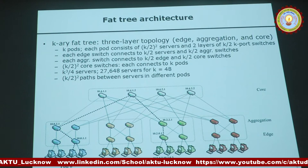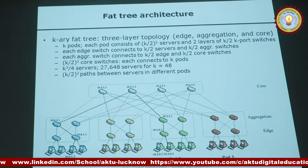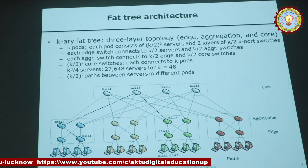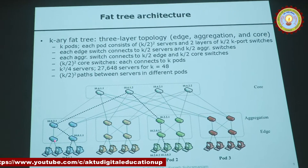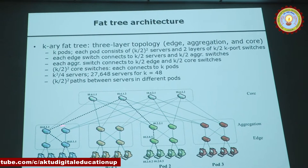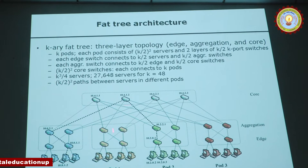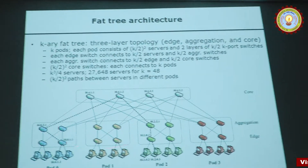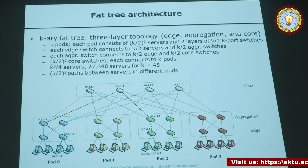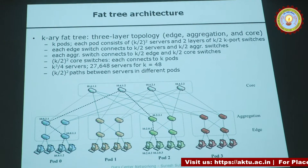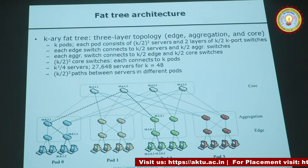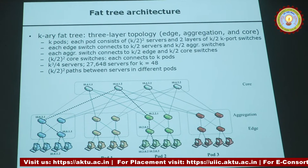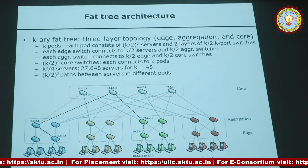There are also many paths to communicate between any two servers. For example, with two switches at each level, there are four distinct paths. In this simple example with just 16 servers, and when you have 27,000 servers there are over 500 paths between any pair of servers — meaning traffic can be rerouted around any congestion.